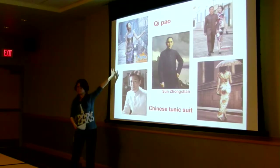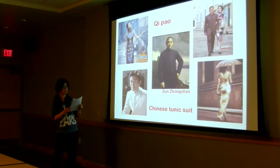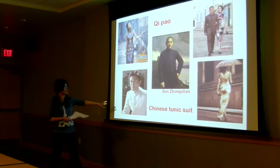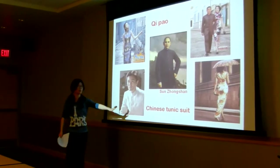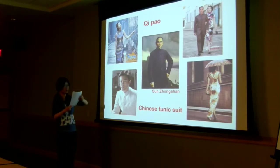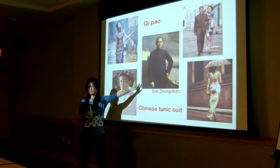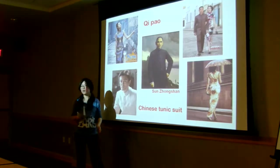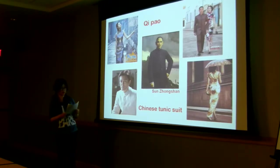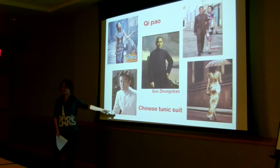This is called the Qipao. The Qipao is a body-hugging one-piece Chinese dress for women, originating from the Qing dynasty. And this is the Chinese tunic suit — in China we call it the Zhongshan zhuang. It's a style of male attire established by Sun Yat-sen after the founding of the Republic of China, combining traditional male clothing with Western fashion.